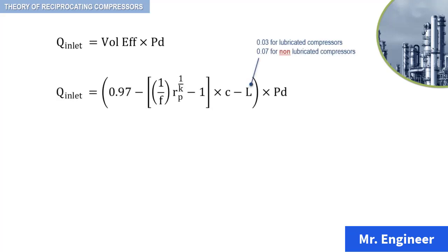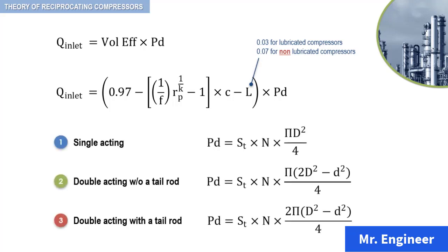Recall that there are four options, which can be described by three equations to calculate the piston displacement: single-acting cylinder, double-acting cylinder without a tail rod, double-acting cylinder with a tail rod, and a single-acting cylinder compressing on the frame end only.